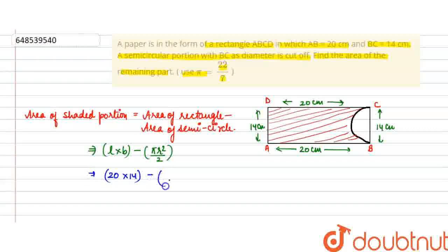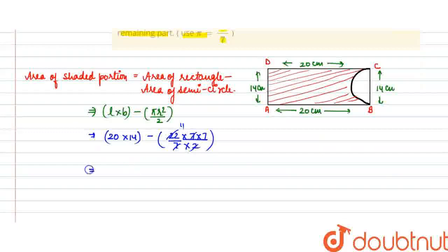Minus pi's value 22 upon 7, radius 7 into 7, and upon 2. 2 cancels to make 11, and 7 cancels with 7. So 20 into 14, 14 to 28, 280 minus, here remains 11 into 7, 77. So 280 minus 77, 203 cm².